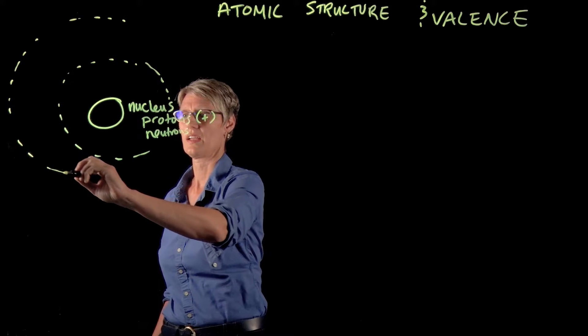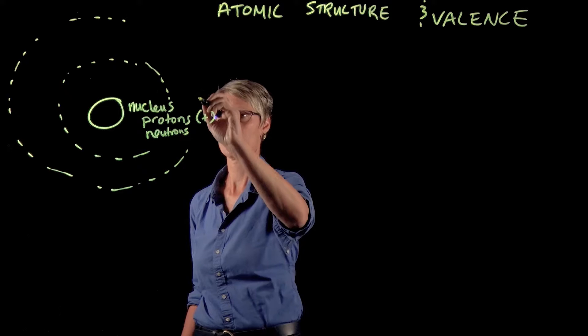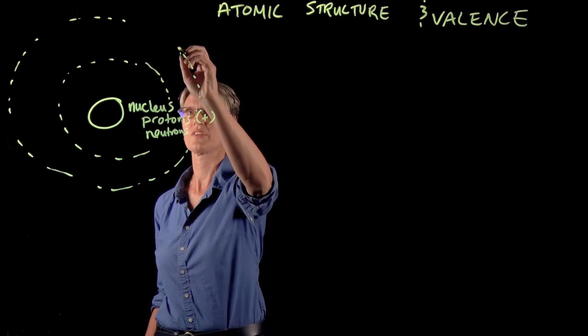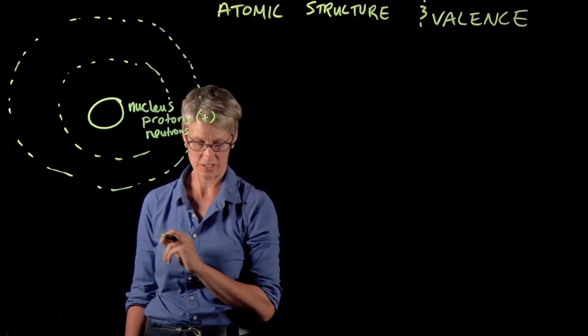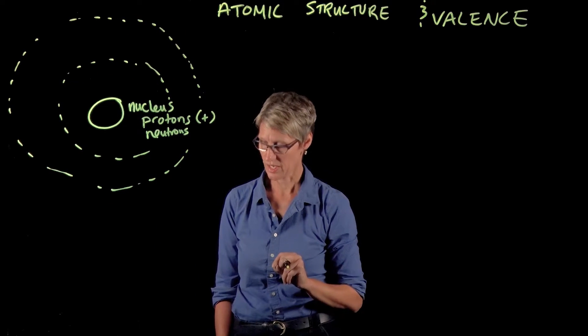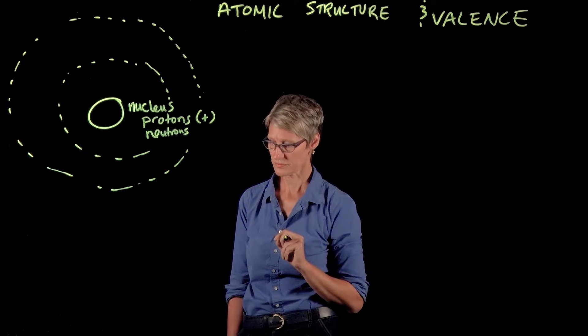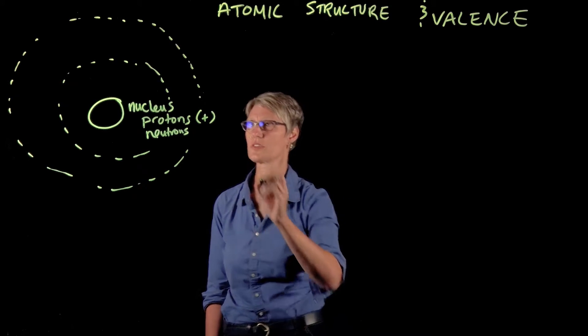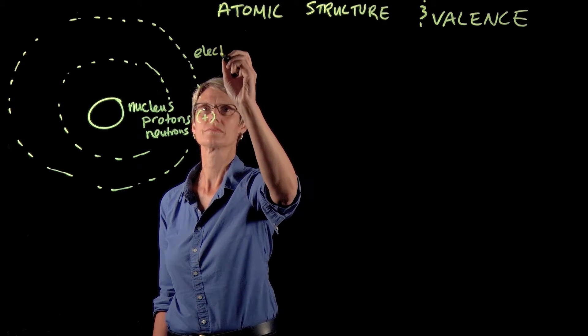And then orbiting around that nucleus are the negatively charged electrons. I'm going to draw a couple of electron shells here, and I'll explain what electron shells are a little bit further along. So we've got our electrons out here.